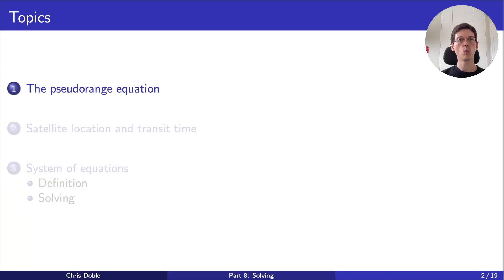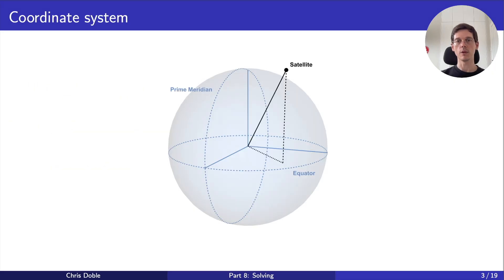First, what coordinate system should we use? If we have some location, say the location of this satellite, how should we describe it? Geodetic coordinates—that is latitude, longitude, and height—are probably the most familiar. Here, the latitude is shown as the angle phi, the longitude is shown as the angle lambda, and the height above the surface of the earth is shown as the length h.